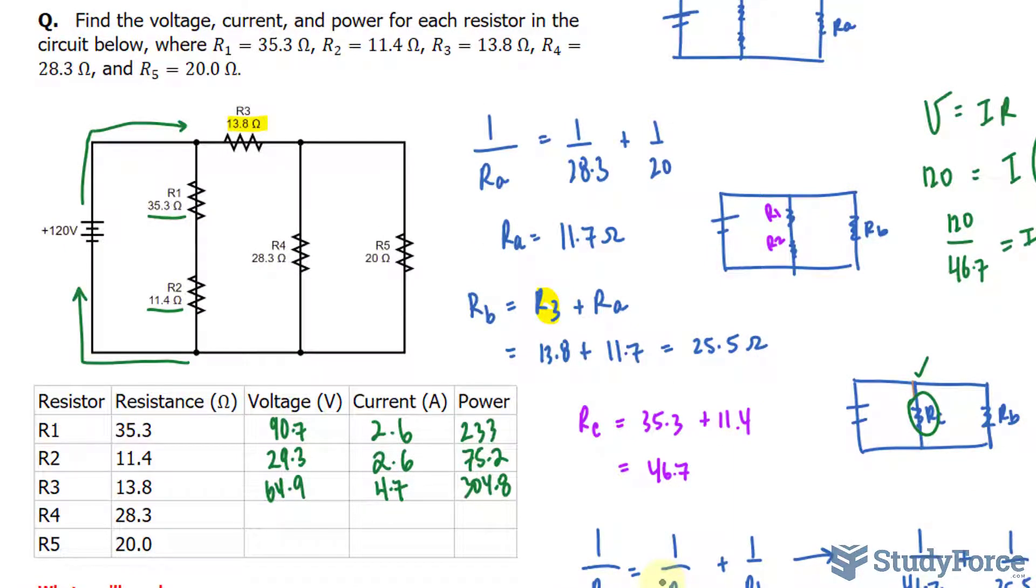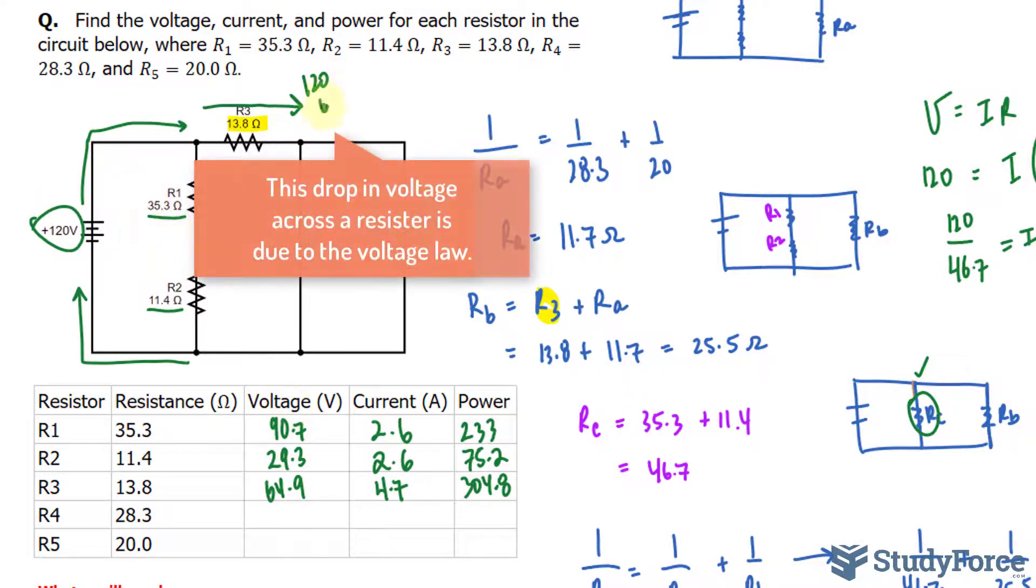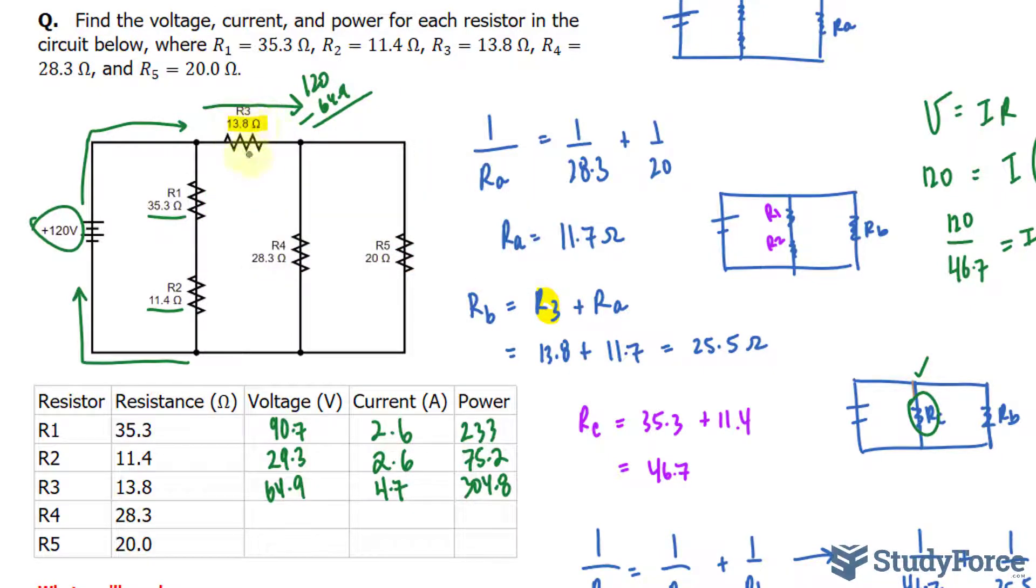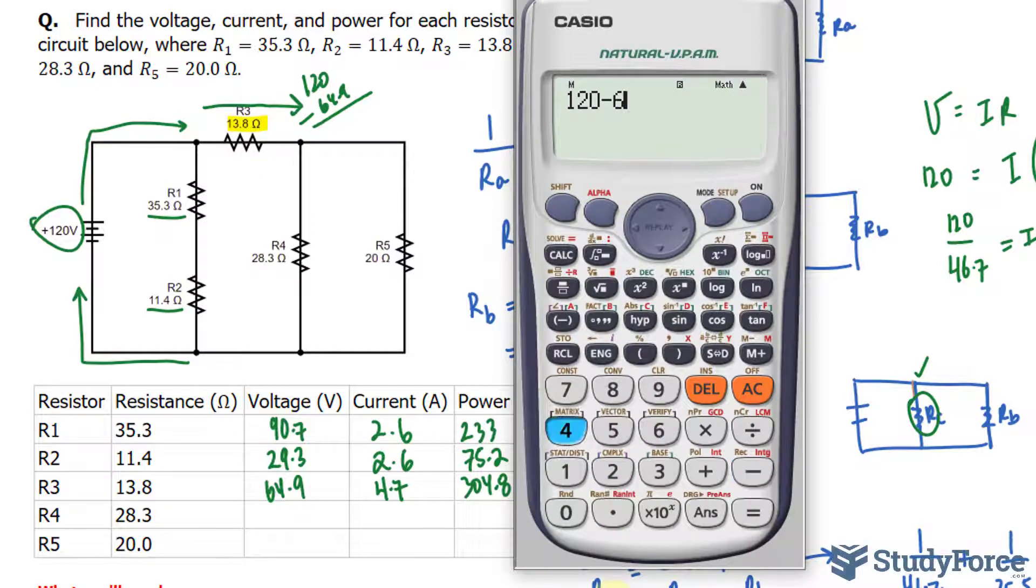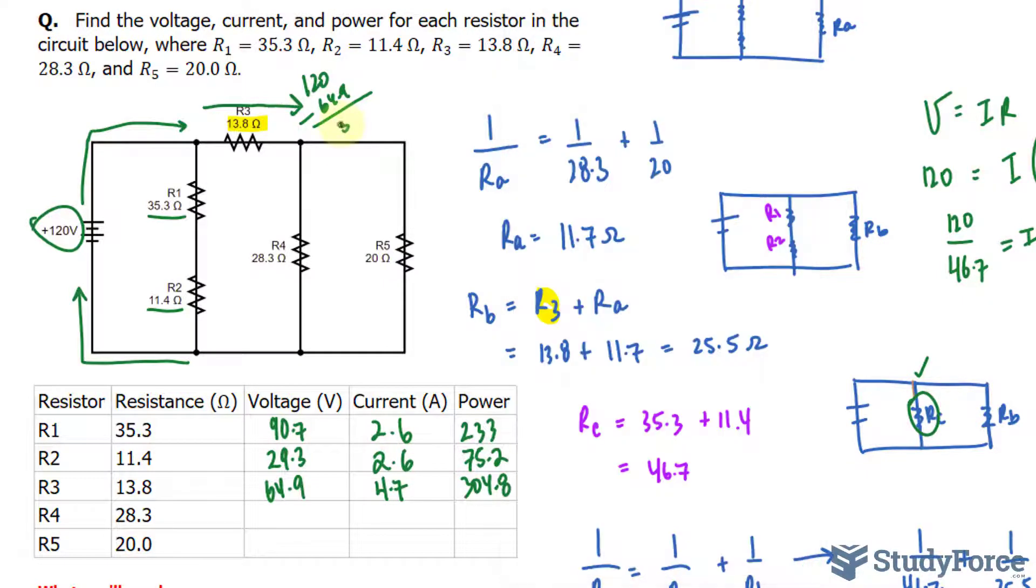Now that we're done with R3, remember that as the current was flowing through this resistor, there was a voltage drop. The volts at R3 were 64.9. To find the voltage after the resistor, you take 120, which is what you started with, and subtract 64.9. That gives you the total volts after the current has passed this resistor: 120 minus 64.9 gives us 55.1.